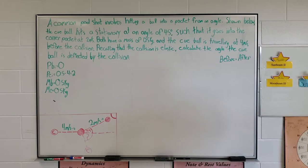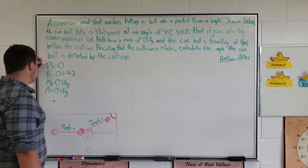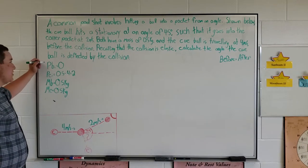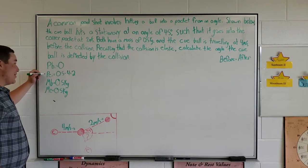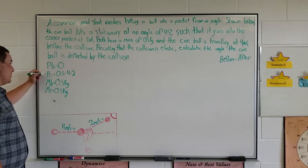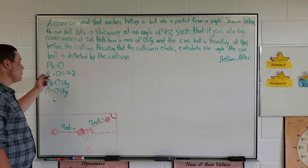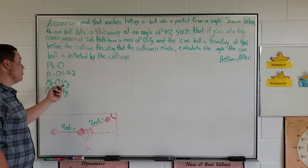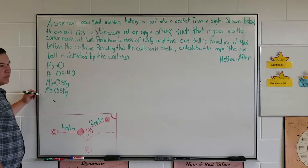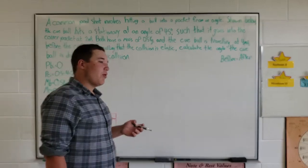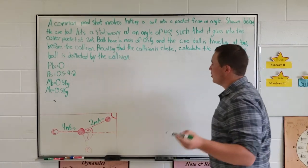So everything we know I've written already. The initial momentum of the stationary ball is zero. The initial momentum of the cue ball is the mass times the velocity, so 0.5 times 4, which equals 2. Both balls have a mass of 0.5 kilograms. Our momentum before and after needs to be the same.